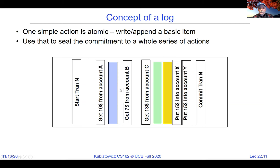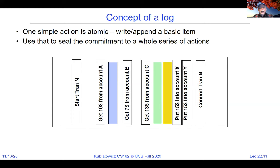A couple of things should be clear. When I put start-transaction, that needs to get committed to the log before anything happens. And when I put my various actions in here, before the final commit happens, it has to be the case that all of these other things are in the log. It can't be the case that I do a commit that gets on disk, but all the other things are still in memory — because then the machine could crash and I'd see start-transaction and commit-transaction with no idea what I just committed. The log needs to be pushed out to disk with an important ordering requirement to make this all work.